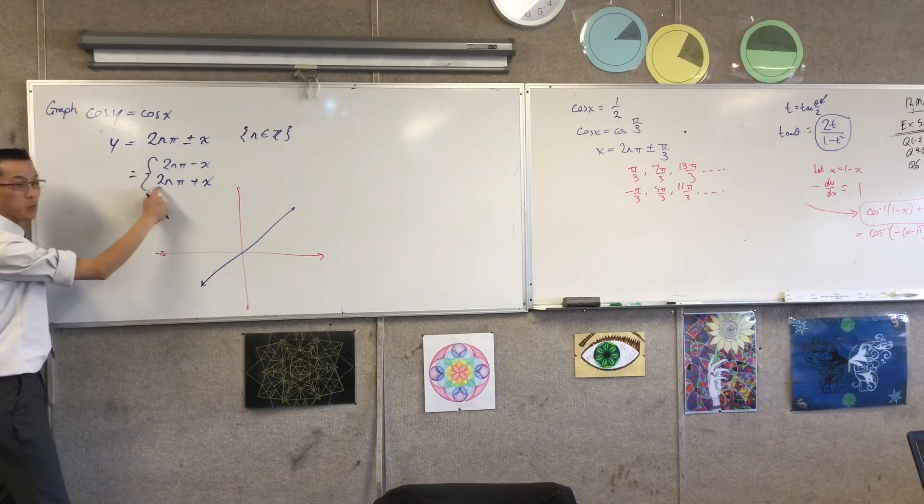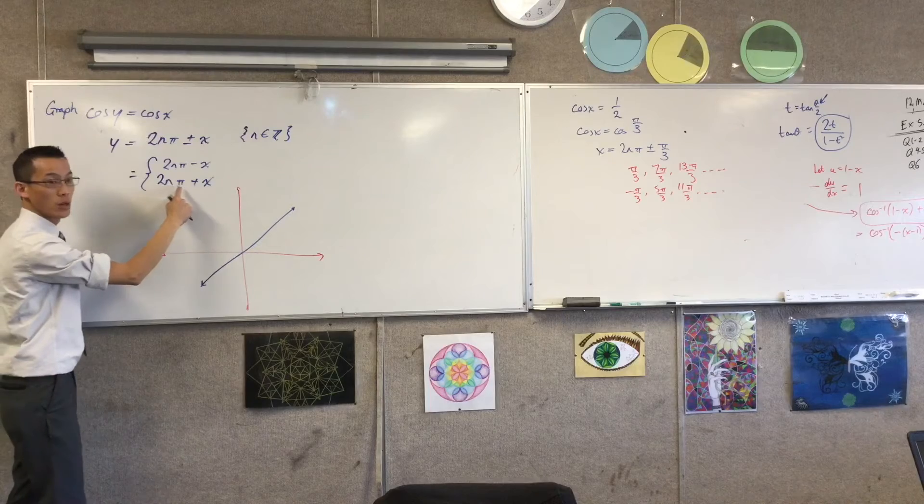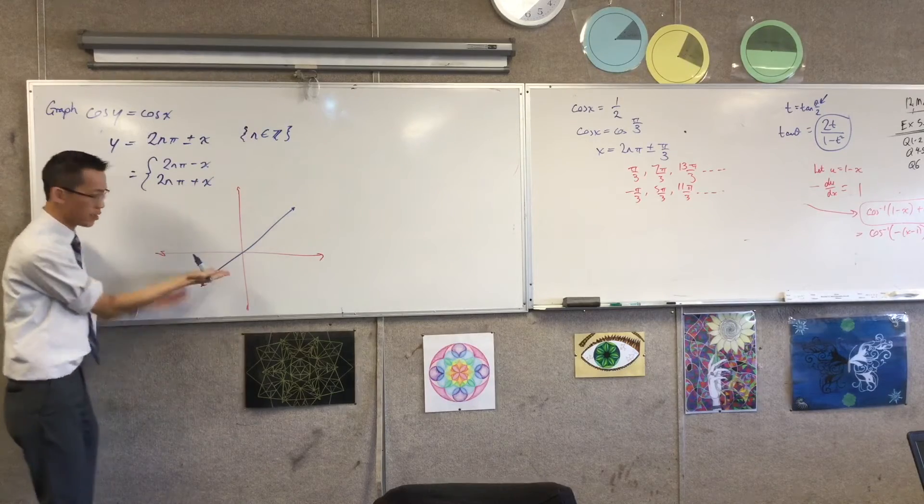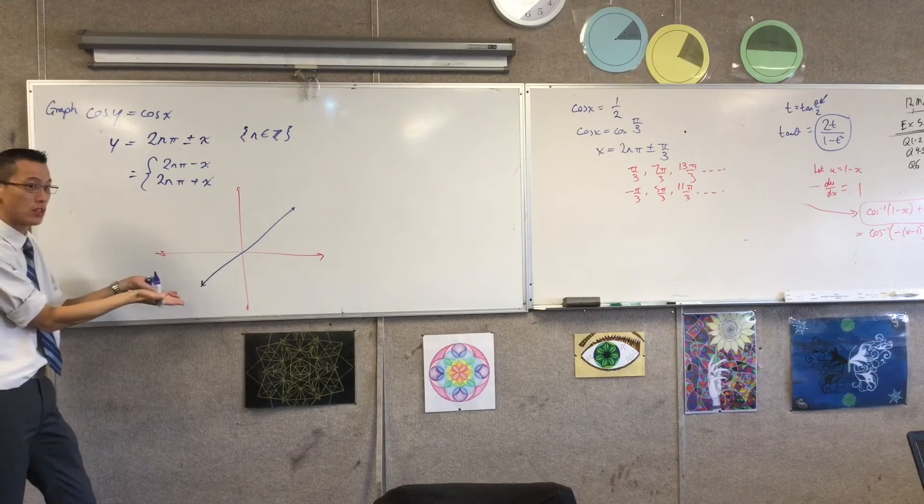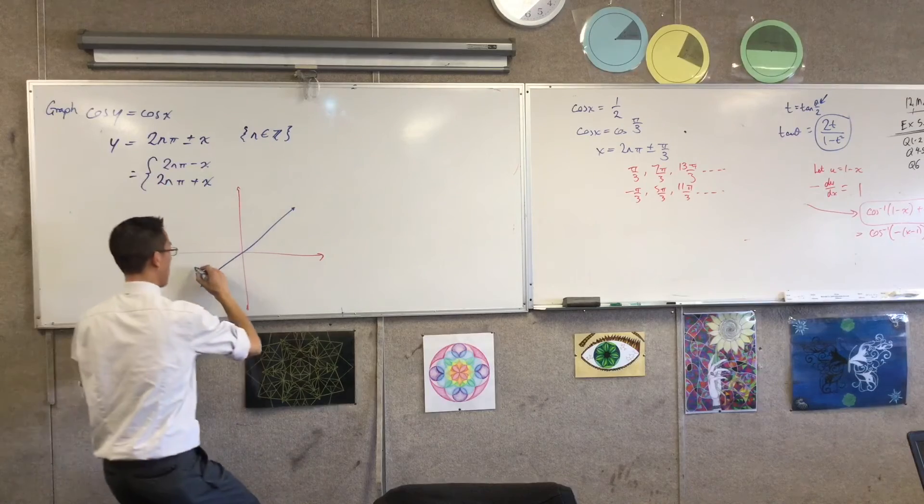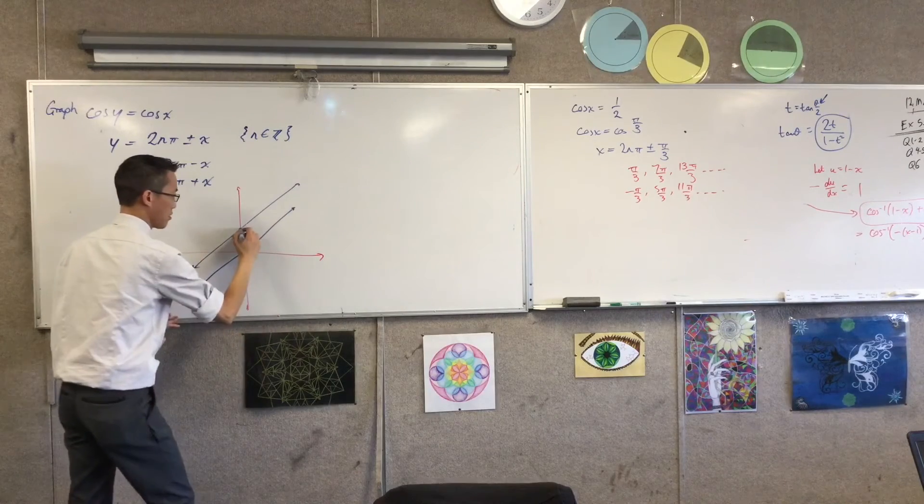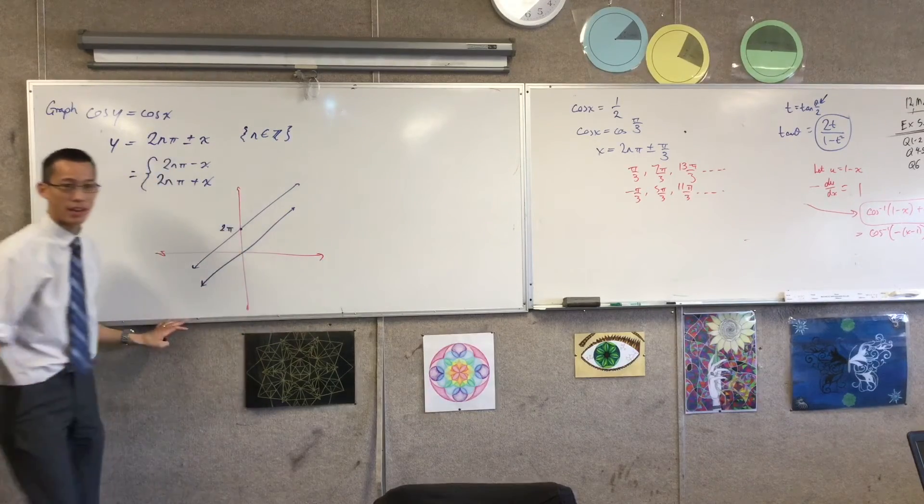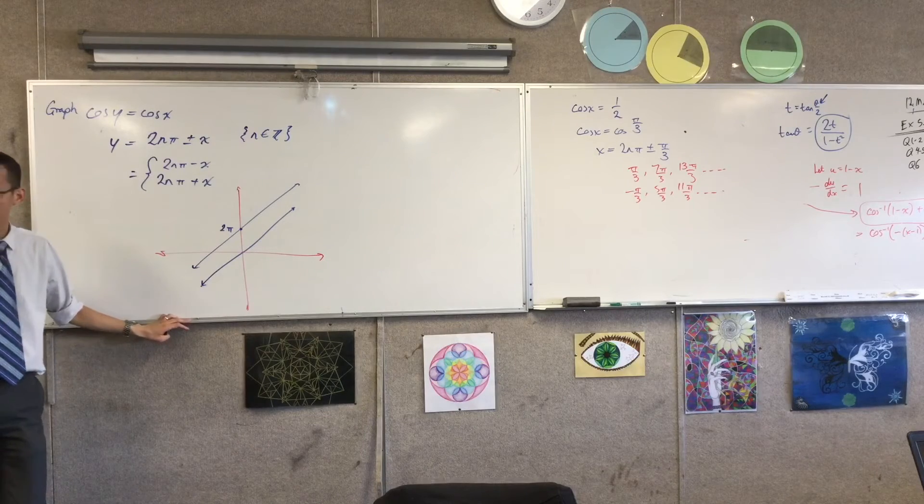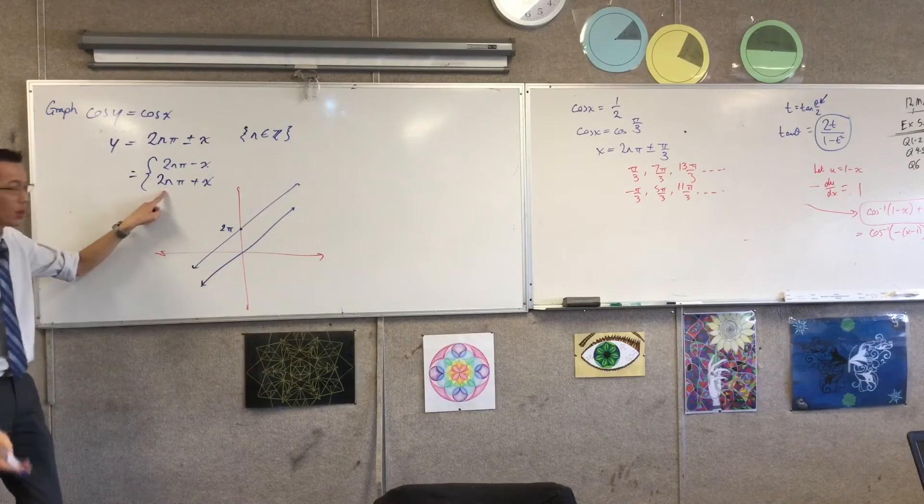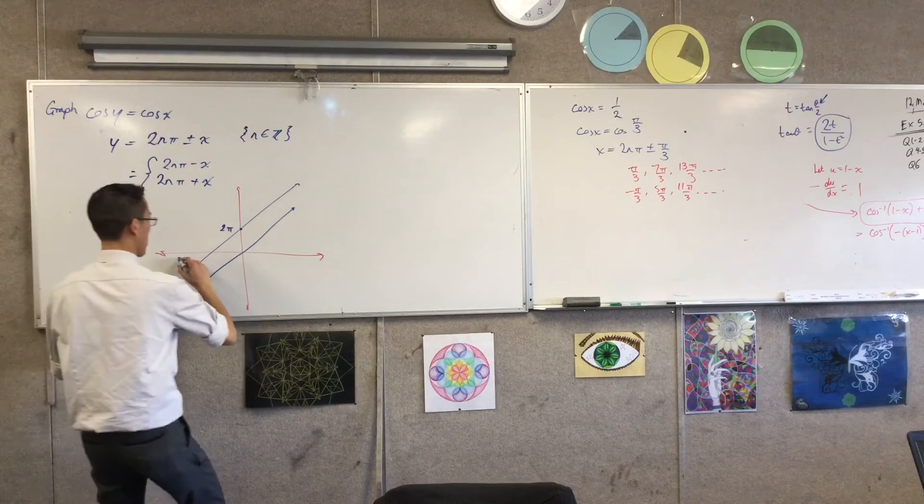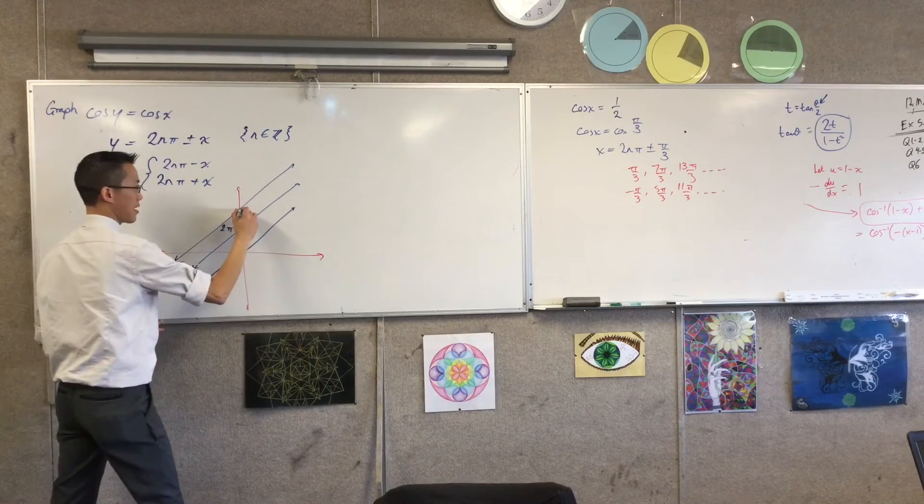Next, n equals one, so y equals 2π plus x. That looks like just this guy, but shifted up 2π units. What's the next one? You're starting to get a pattern, right? This is n equals two, so it's going to be 4π plus x. So that's going to, there we go, let's see how consistent I can be.